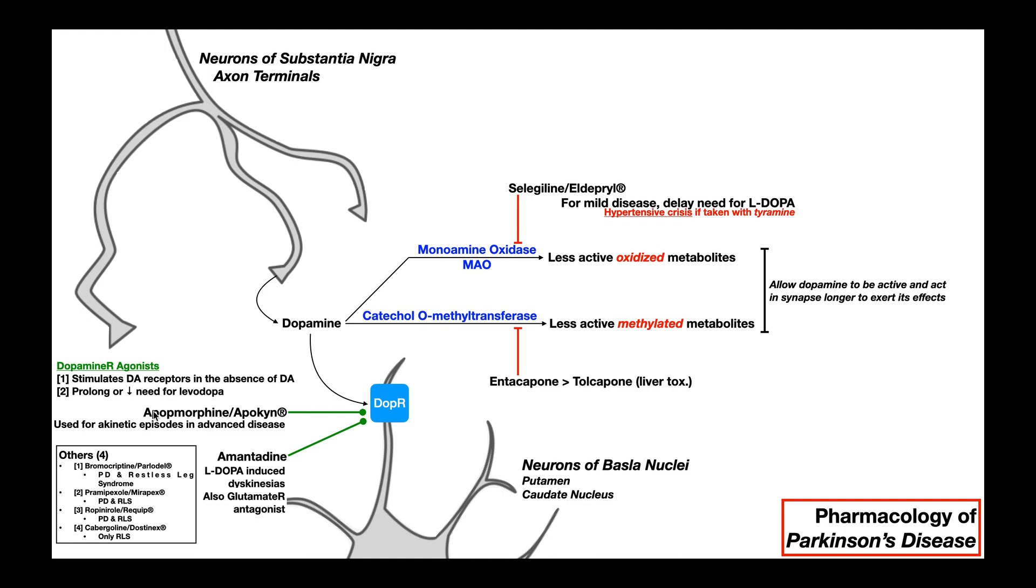The other drug here, which is also a dopamine receptor agonist, is apomorphine, also called apokine. This is used in the advanced stages of Parkinson's disease, really to treat akinetic episodes. So this would actually not be a first line of defense in any case. It's only used in the very late stages of the disease when a patient has an akinetic episode.